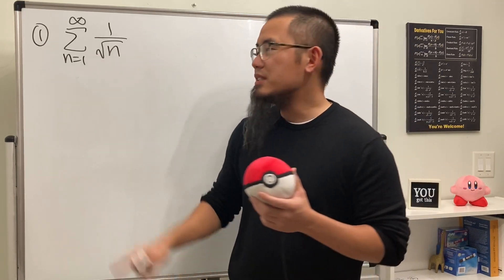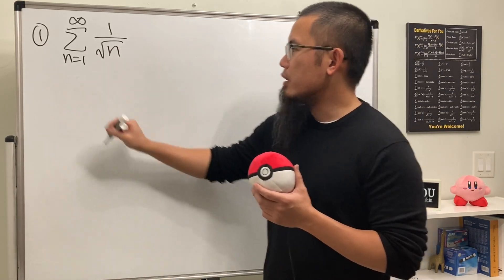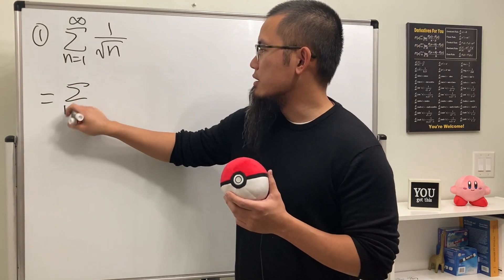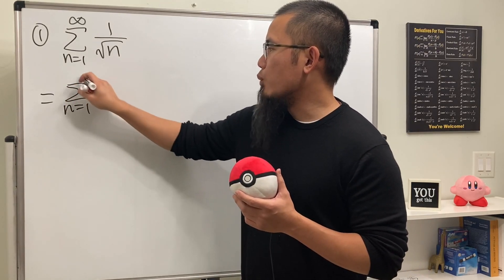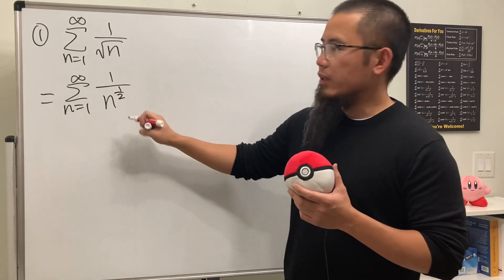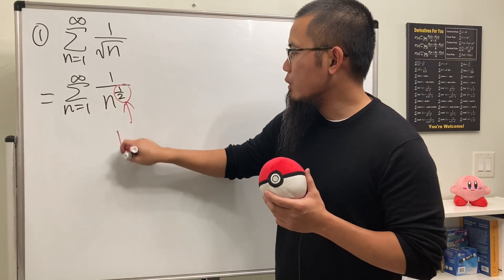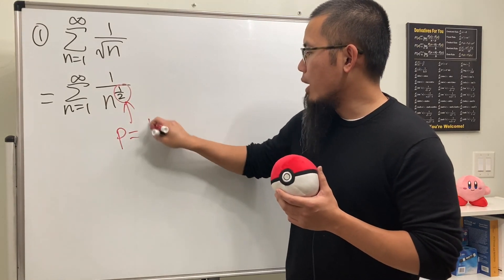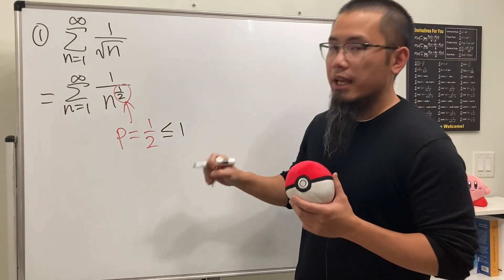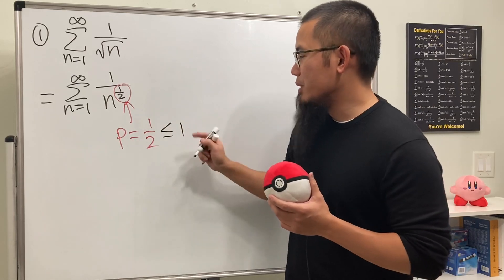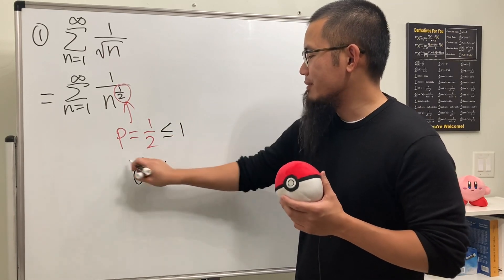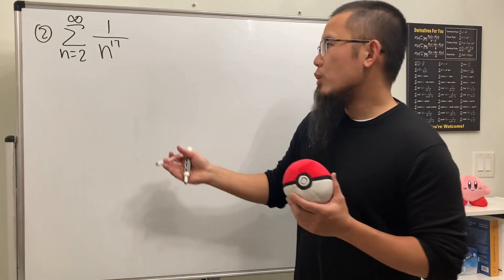For the first one in this p-series review, we can write the square root as the one-half power, so this is the same as the series as n goes from one to infinity of one over n to the one-half power. Here p is one-half, and because p is less than or equal to one, this series diverges.